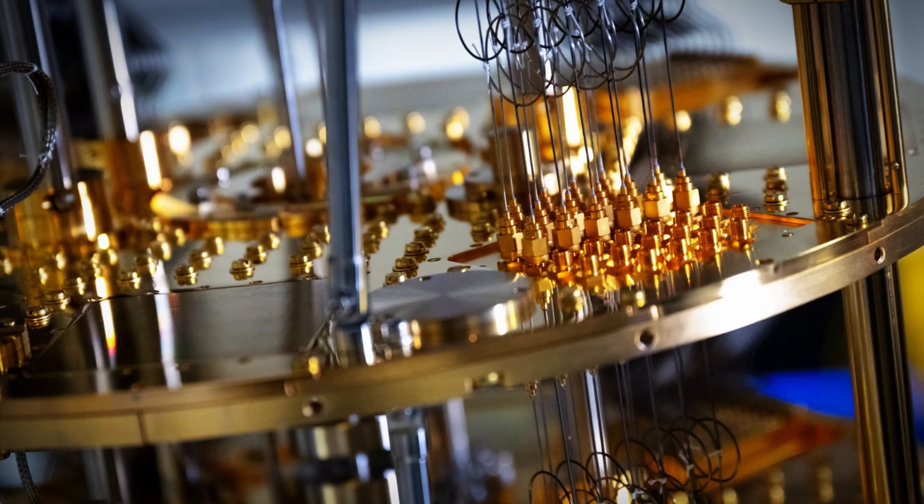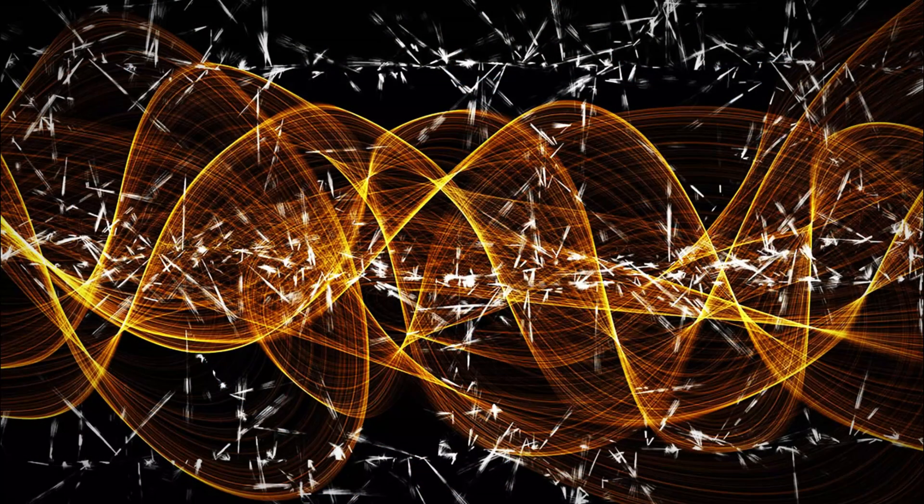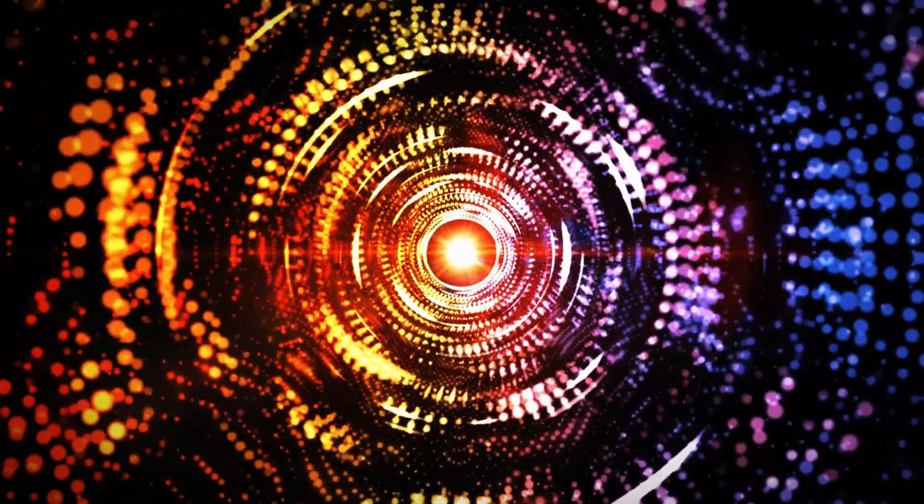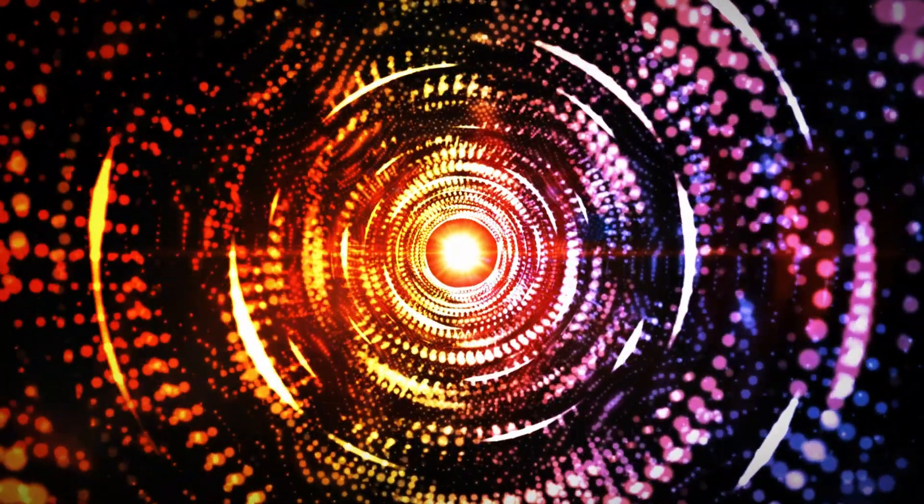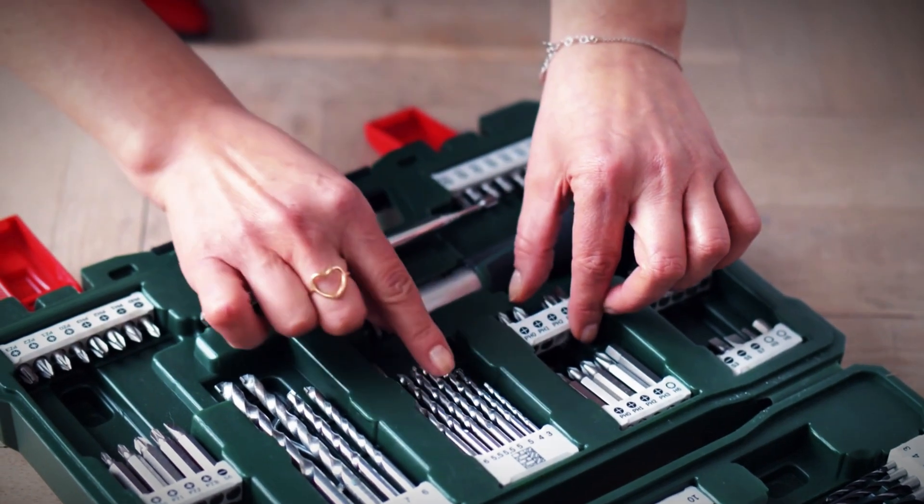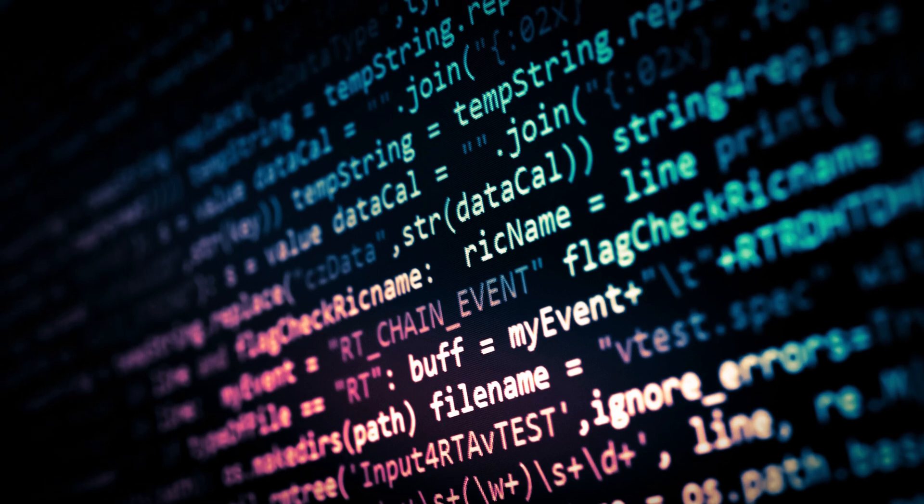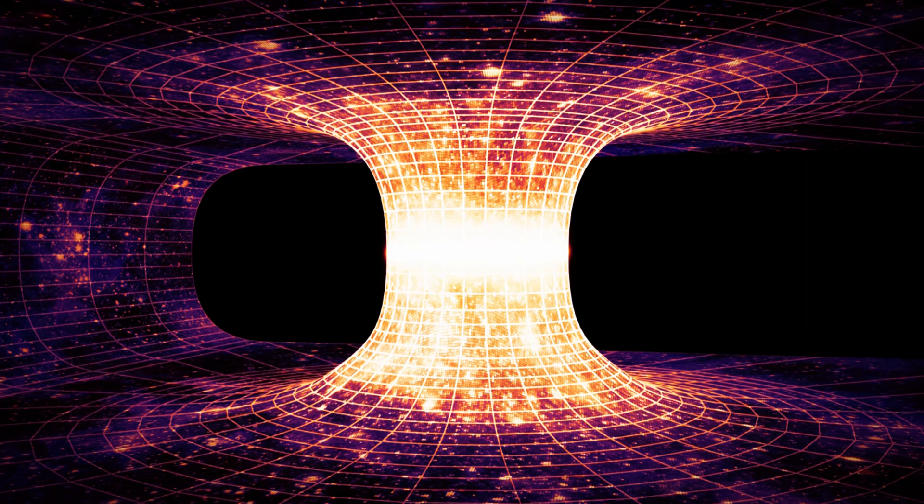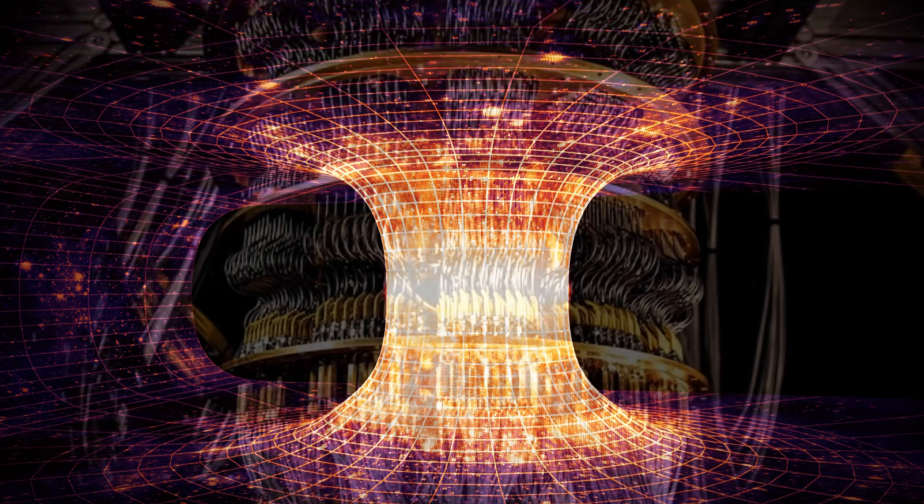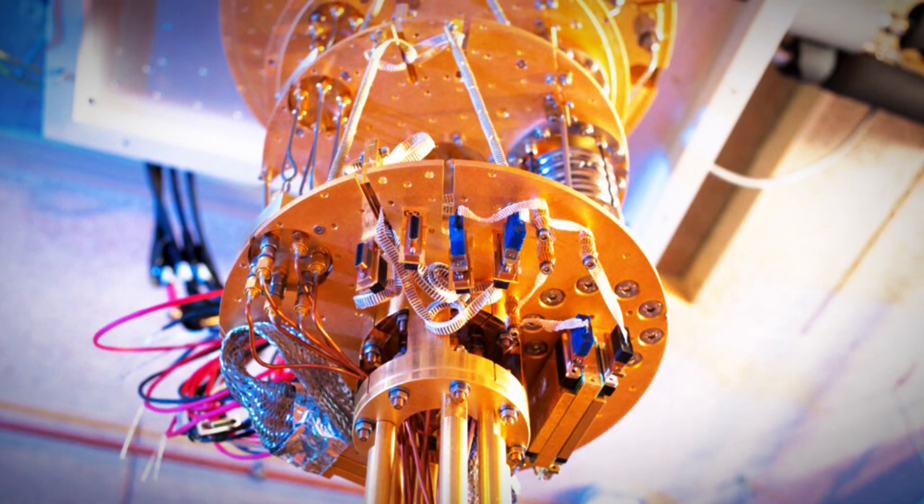To grasp how Google's quantum chip might have bridged the gap between our universe and parallel ones, we must first explore the concept of superposition. Superposition is one of the most intriguing and powerful principles of quantum mechanics. It allows a quantum system, like a qubit, to exist in multiple states simultaneously. Unlike a traditional computer bit, which can only be either zero or one, a qubit can represent both at the same time. In classical computing, data is processed in binary form, either on one or off zero. However, in the quantum world, a qubit exists in a blend of both states, a phenomenon known as superposition. This unique property enables quantum computers to process information at speeds that are unimaginable for conventional computers.